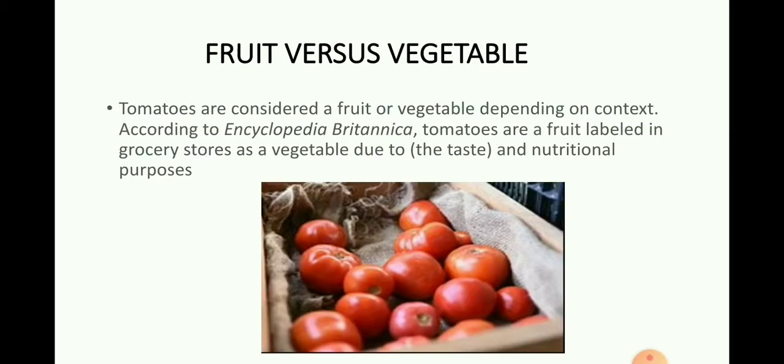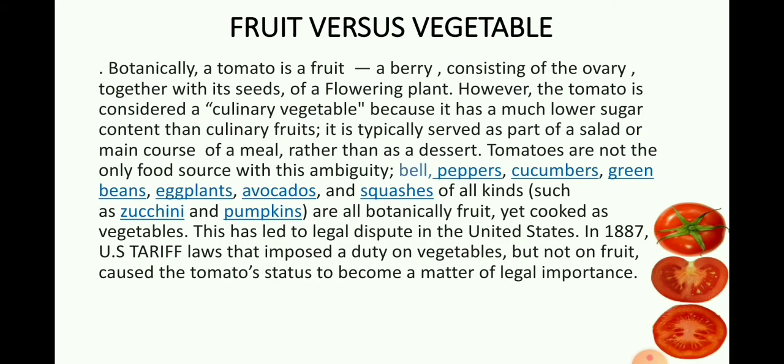Fruit versus vegetable: Tomatoes are considered a fruit or vegetable depending on context. According to Encyclopedia Britannica, tomatoes are a fruit but labeled in grocery stores as a vegetable due to taste and nutritional purposes. Botanically, a tomato is a fruit — a berry consisting of the ovary together with its seeds of a flowering plant. However, the tomato is considered a culinary vegetable because it has a much lower sugar content than culinary fruits and is typically served as part of a salad or main course rather than as a dessert.